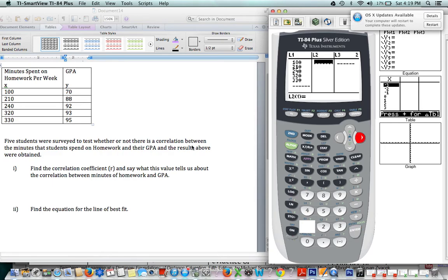And now we have to enter our GPAs, which are our Y values in L2. So we have 70, 88, 92, 93, and 95.